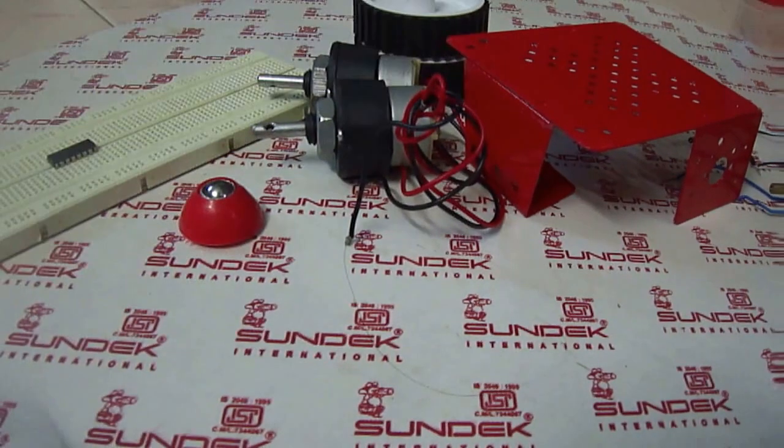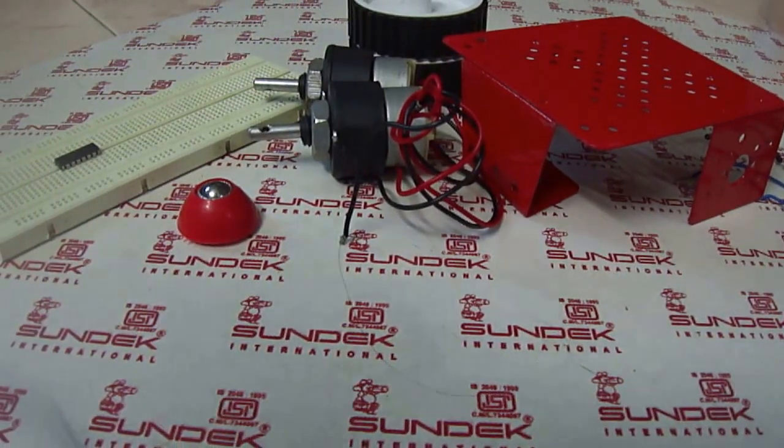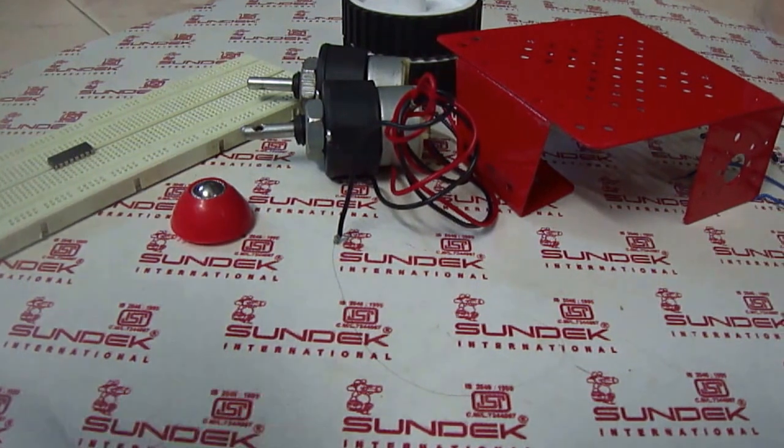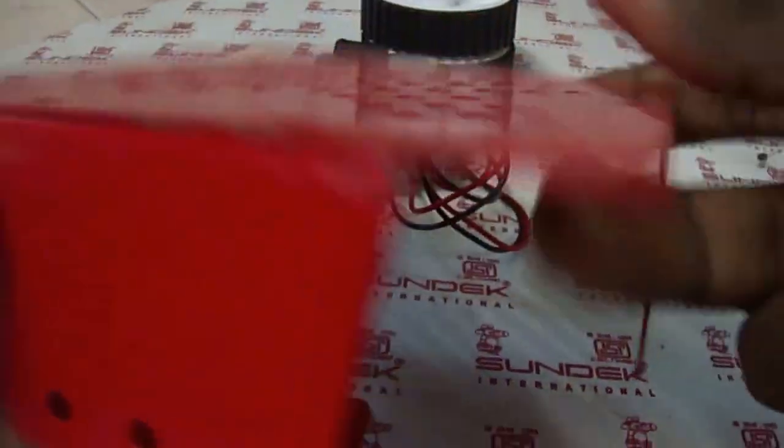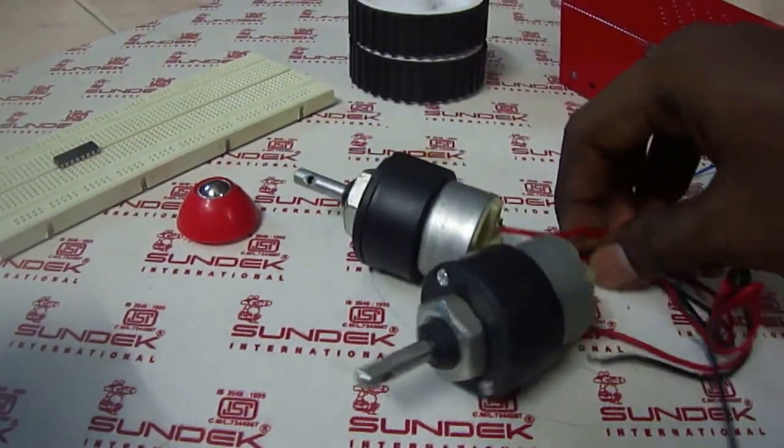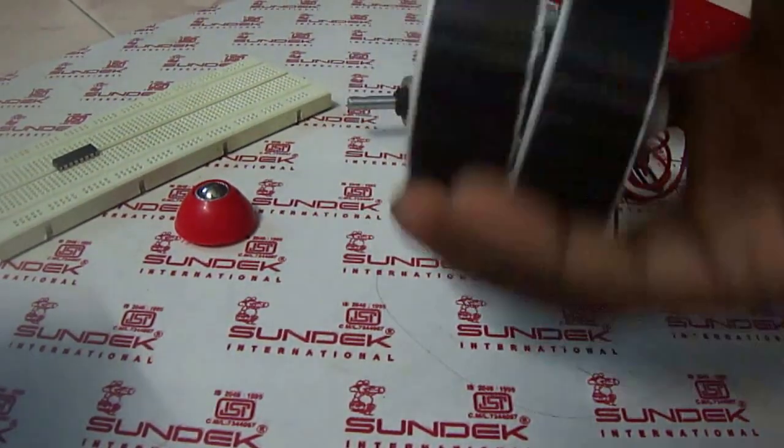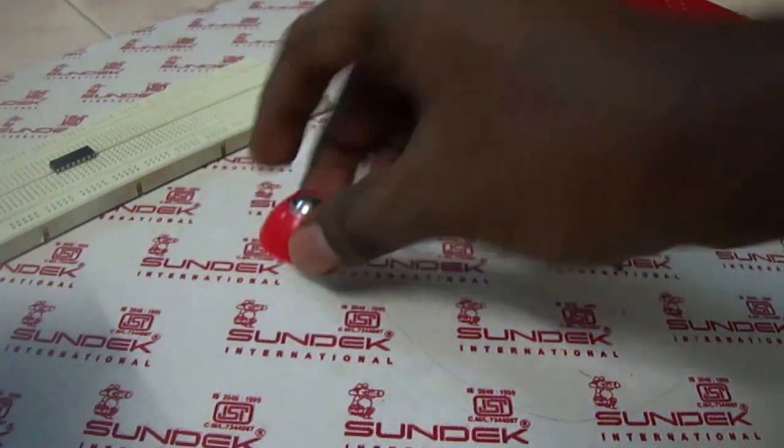Hi, in this video you will see a fire following robot. For this we need components like a chassis, two motors, two wheels, and a caster wheel.